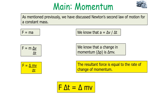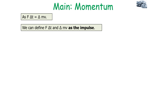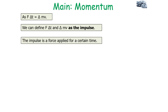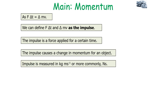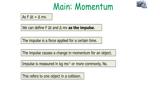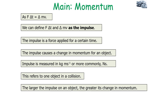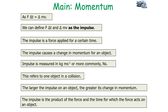Rearranging gives FΔt = Δ(mv). The quantity FΔt — force multiplied by the change in time — is the impulse. Impulse is a force applied for a certain time, and it causes a change in the momentum of an object. Impulse can be measured in kilogram meters per second, or more commonly newton seconds. The impulse refers to one object in a collision; the larger the impulse on an object the greater its change in momentum. Impulse is the product of the force and the time for which the force acts.